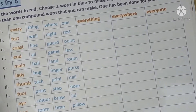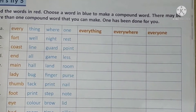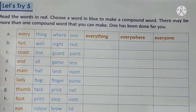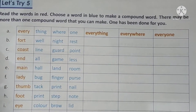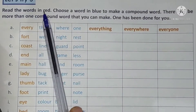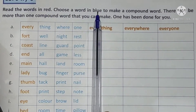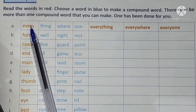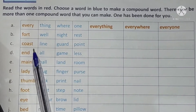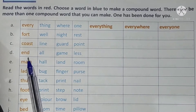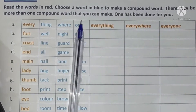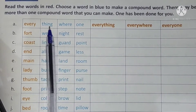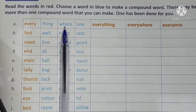So now we are going to look at Let's Try Five. Here in Let's Try Five, what they have given is: read the words in red, then choose a word in blue to make a compound word. The blue color ke teen columns hain — teen tarah ke shabd hain jo blue color mein hain.